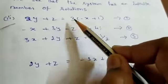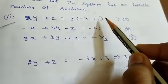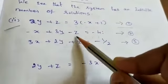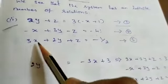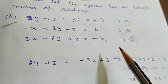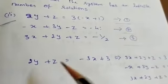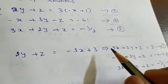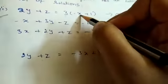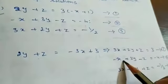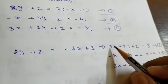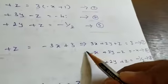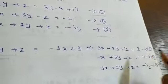Now the second part: 2y plus z equal to 3 into minus x plus 1 is equation 1; minus x plus 3y minus z equal to minus 4 is equation 2; 3x plus 2y plus z equal to minus 1 by 2 is equation 3. Expanding equation 1: 2y plus z equal to minus 3x plus 3, so bringing 3x to the other side gives 3x plus 2y plus z equal to 3 — equation 1.